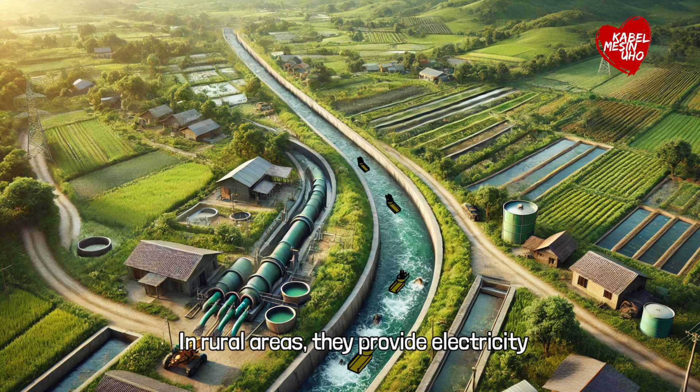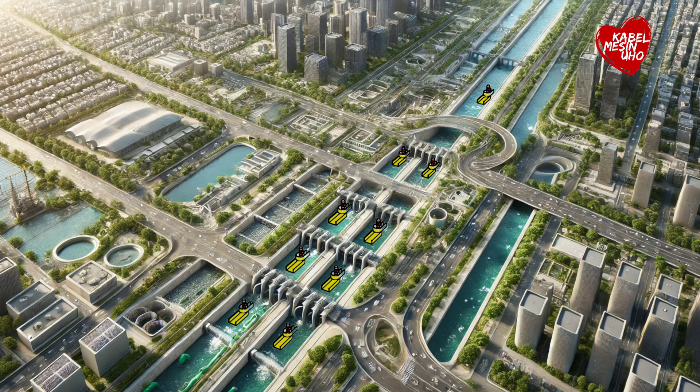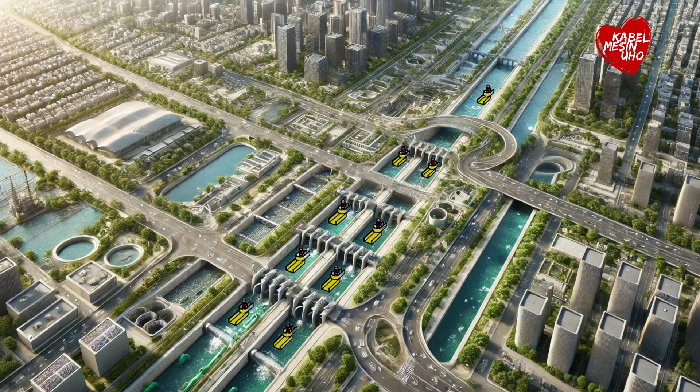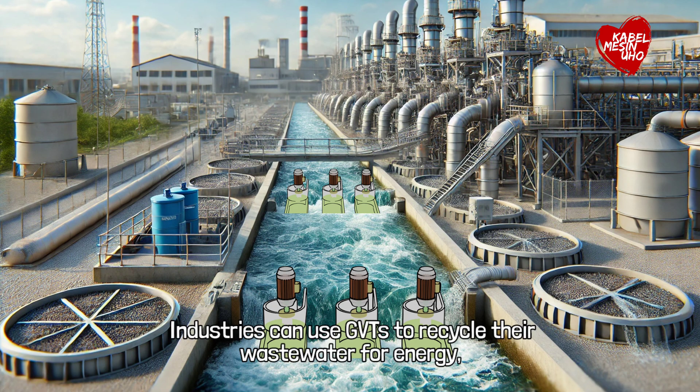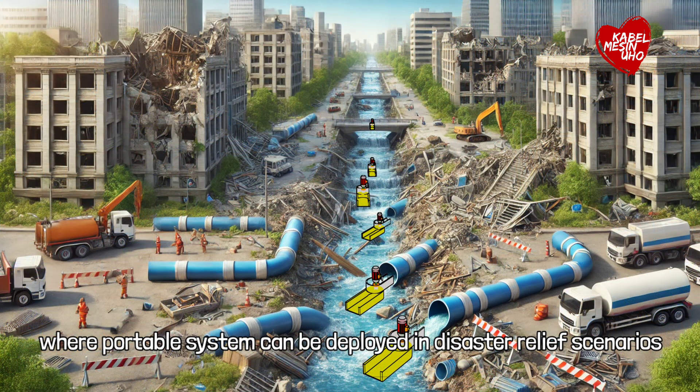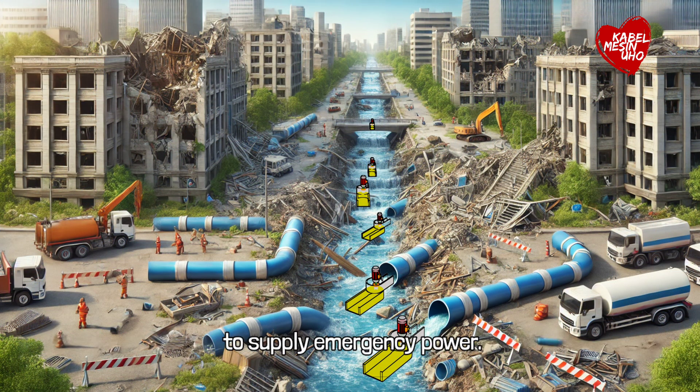In rural areas, they provide electricity for homes and farms using river water. In cities, they integrate into wastewater systems to power street lights and public infrastructure. Industries can use GBTs to recycle their wastewater for energy, while portable systems can be deployed in disaster relief scenarios to supply emergency power.